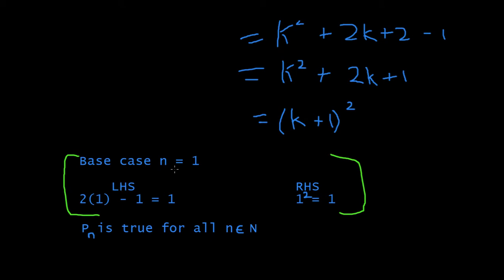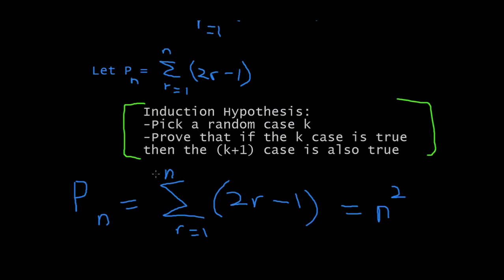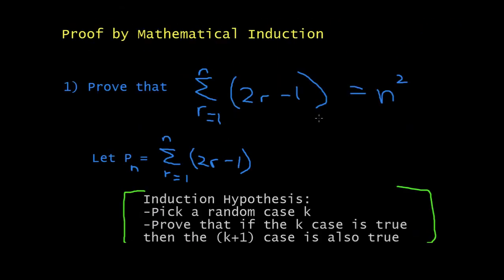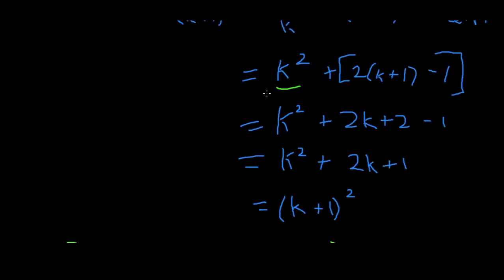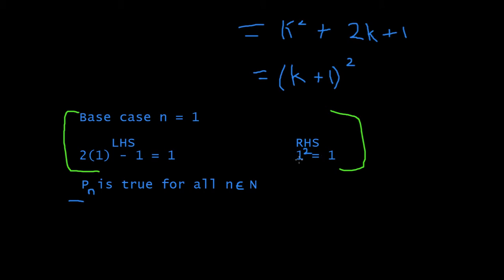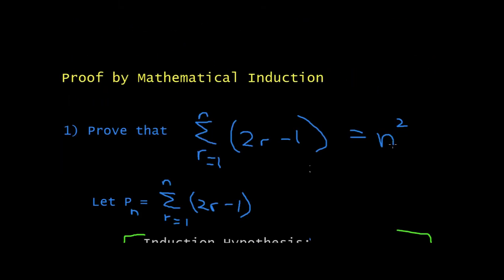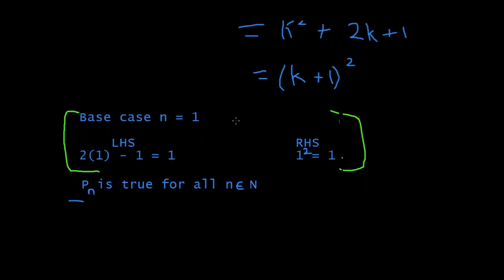So, what they just do is take the base case as N is equal to 1. The left-hand side, substitute 1 in here. 2R minus 1 is equal to 1, if you substitute R is equal to 1. And right-hand side, substitute 1 inside. So, we just substitute 1 into N, and you end up with 1 is equal to 1, so the base case is true. We proved for the base case. And we proved for any value where N is equal to K. So, then we could say at the end, PN is true for all values. N is part of the set of natural numbers.